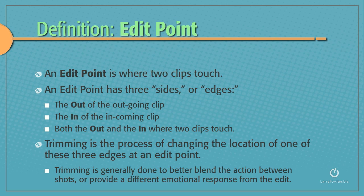Trimming is the process of changing the location of one of these three edges at an edit point. Trimming is generally done to better blend the action between shots or provide a different emotional response from the edit.